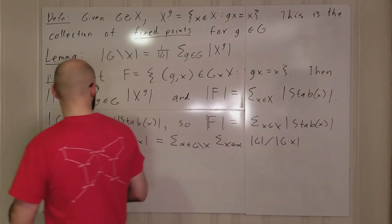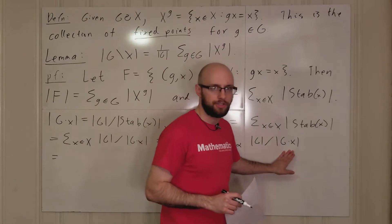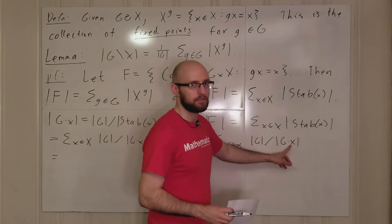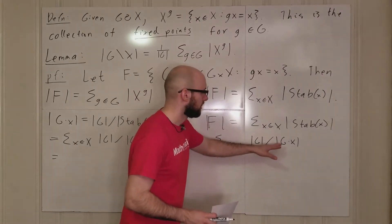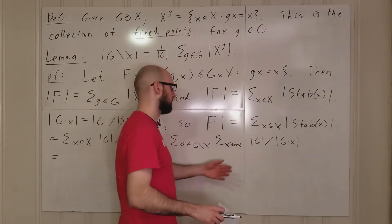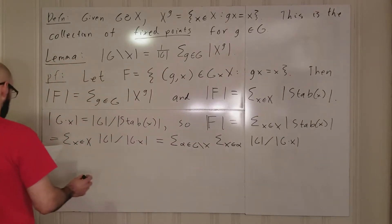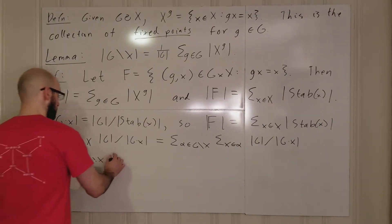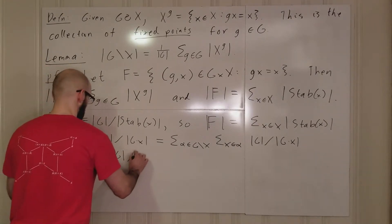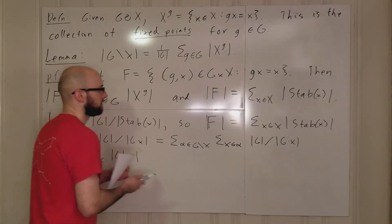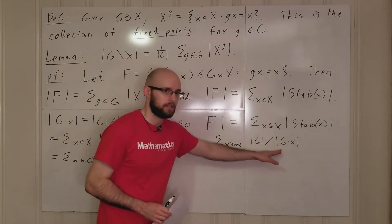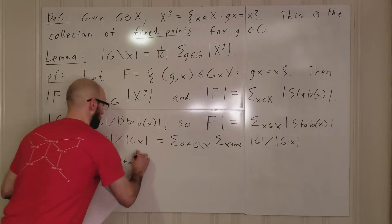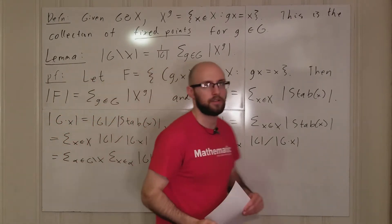The orbit G(x) for any x in orbit α is just the size of α, since the orbit of every element in the same orbit has the same size. So we can write this as the sum over all α in G\X (the set of G-orbits of X) of the sum over x in α of |G| divided by |α|.